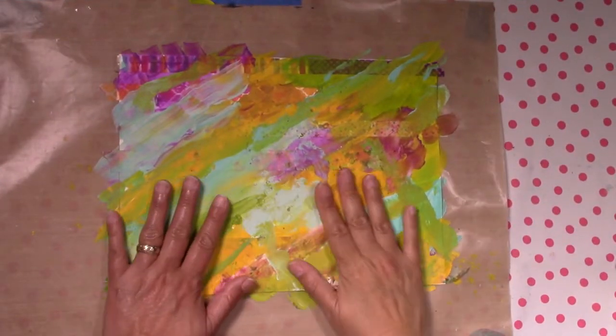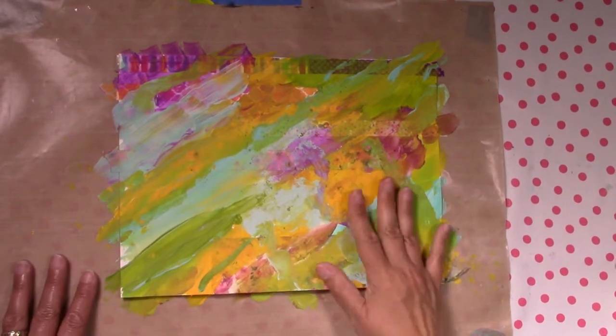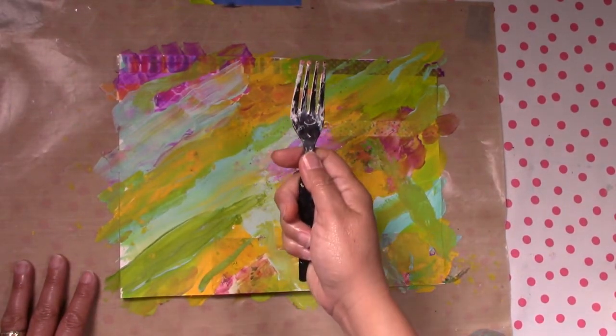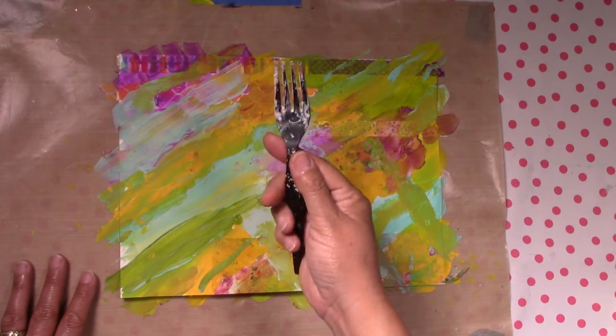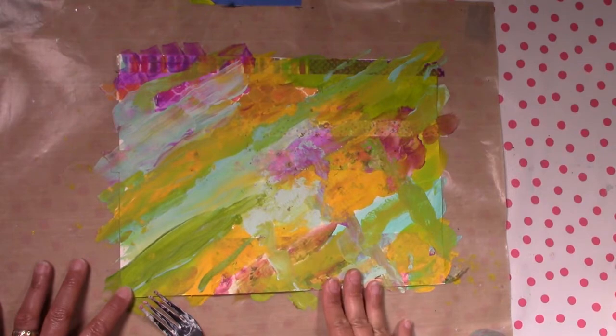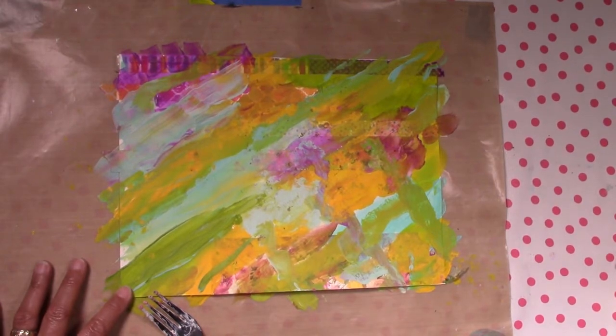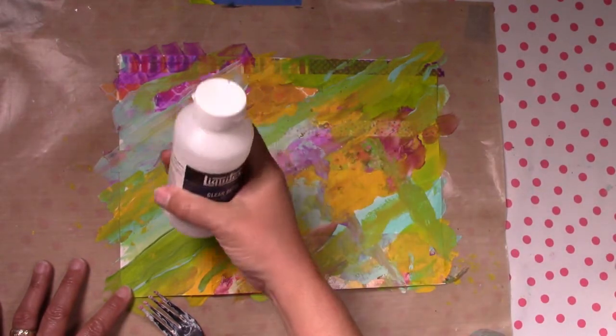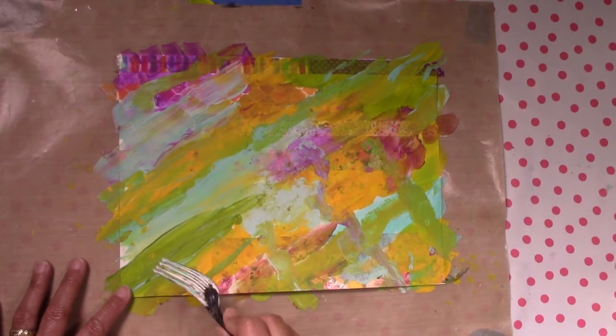This is dry and I found my magic fork. Yay! I'm going to apply a little bit of clear gesso and I'm going to make some little shapes with my fork.